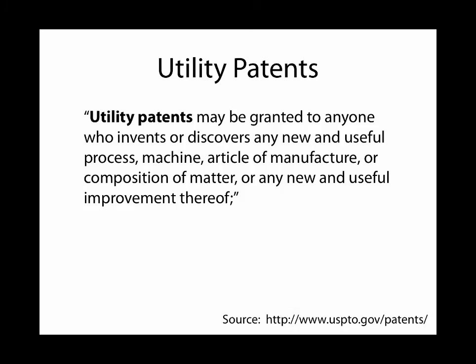Quoting from the USPTO website, a utility patent covers processes, machinery, devices, articles of manufacture — things you make — composition of matter, which could be materials, and any new and useful improvement.